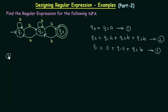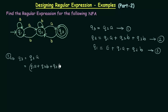Now we have written the equations for states Q1, Q2 and Q3. Let's simplify them. First, take equation 1: Q3 = Q2A. We substitute the value of Q2 from equation 2, so Q2 = Q1A + Q2B + Q3B. Taking A inside, we get Q3 = Q1AA + Q2BA + Q3BA. This is equation number 4.